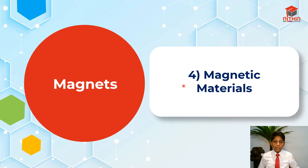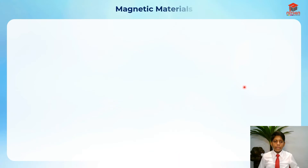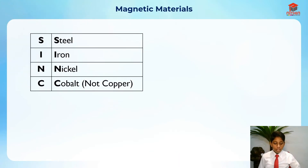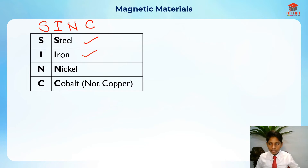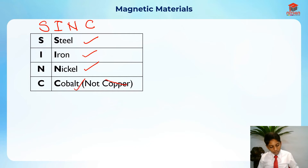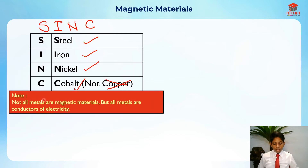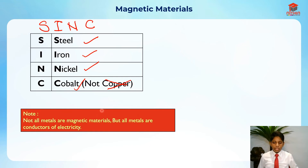For segment number four, I'm going to talk about magnetic materials. You need to know this acronym called SINC — S-I-N-C. S stands for steel, I stands for iron, N stands for nickel, and C stands for cobalt and not copper. Copper is a common misconception. Not all metals are magnetic materials, but all metals are conductors of electricity.